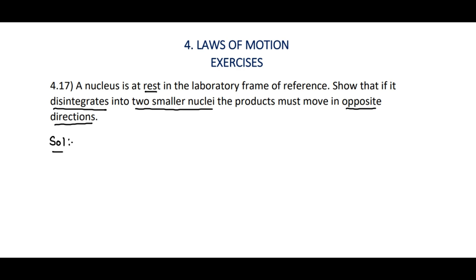Assume that the mass of the nucleus initially is M. After disintegration it breaks into two small parts. Since no external force is acting, as per conservation of momentum, the total momentum before disintegration equals the total momentum after disintegration. Before disintegration, the nucleus has mass M and velocity zero.